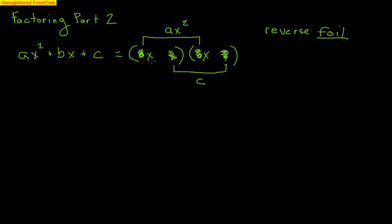The other two parts — the outside and the inside — have to multiply and then add together to create the bx in the middle. That's the complicated part: once you figure out what values make a and what values make c, you have to make sure the outside and inside terms add up or combine to create the bx in the middle. Let's look at a couple of easy examples.